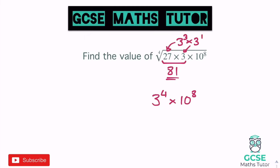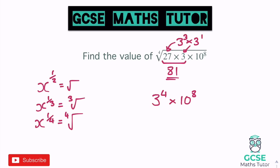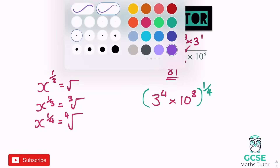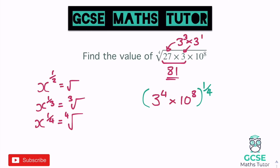There's another way to write the fourth root using powers. Just as x to the power of a half is a square root and x to the power of a third is a cube root, x to the power of a quarter represents a fourth root. So we can rewrite the entire expression in brackets to the power of a quarter. When powers are inside brackets, we can multiply them together.